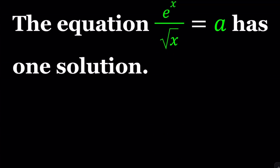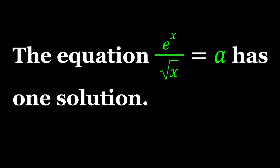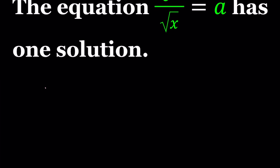We want this equation to have a single solution. Since a is a parameter, for different values of a you're going to get different solutions, and in some cases no solutions at all. We have to find a set of values for a for which this equation will have a single solution. We're going to look at some graphs. The first is the graph of f(x) = e^x / √x, and the second approach uses two functions g(x) = e^x and h(x) = a√x.